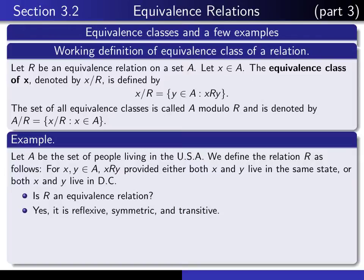I claim it is. Why is it reflexive? Reflexive means that given any person living in the United States, that person lives in the same state as that person — so that's obviously true. Why is it symmetric? It means for any two people X and Y, if X lives in the same state as Y, then Y obviously lives in the same state as X. And why is it transitive? For any three people X, Y, and Z, if X lives in the same state as Y, and Y lives in the same state as Z, then clearly X lives in the same state as Z. So this is an equivalence relation.